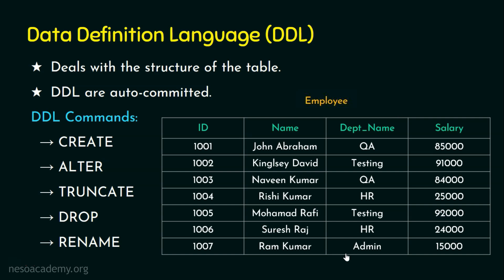Now assume I have already created this table but inadvertently missed including a column. For example, after Salary I want to add a new column called 'gender'. Creating a brand new table just for this would be wasteful. Since the table already exists and I only need to add a new column, I can use ALTER. ALTER is used to deal with the structure of the table by adding a new column, dropping an existing column, or changing a column's data type. Since ALTER deals with structure, it is also a DDL command.